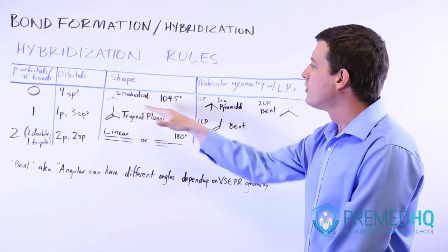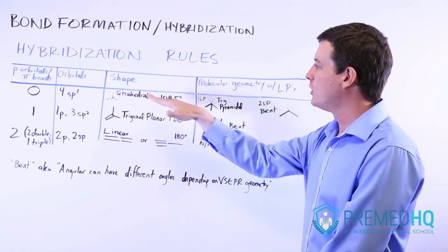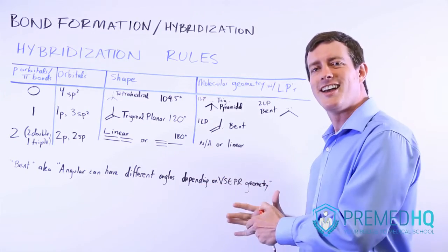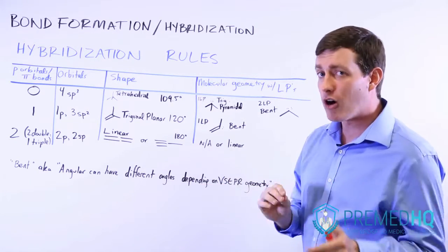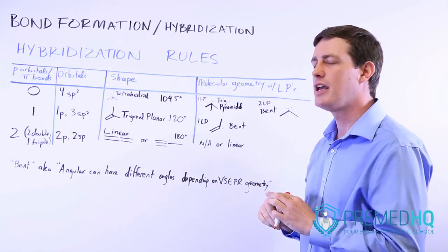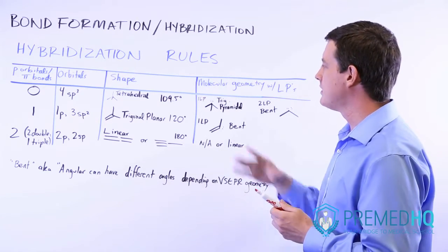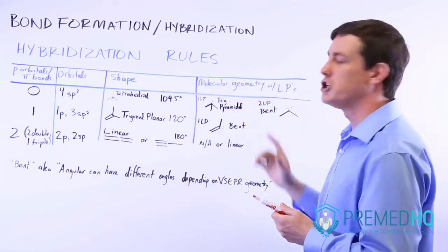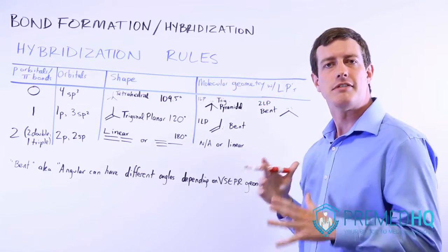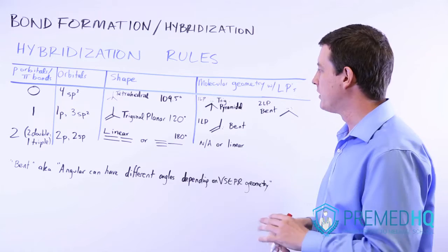Now the overall geometry of it will be tetrahedral, whether or not it has lone pairs. But if there are lone pairs, those don't participate in the molecular bonding. And because of that, you might see a term come up called molecular geometry. And that's specifically looking at the geometry of the bonding components.